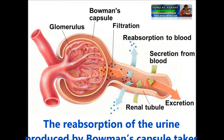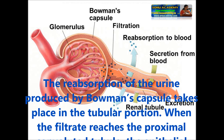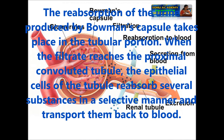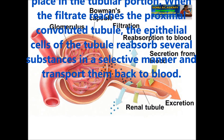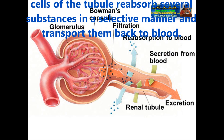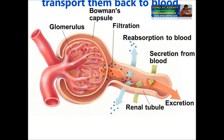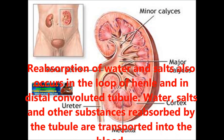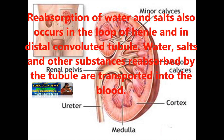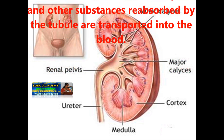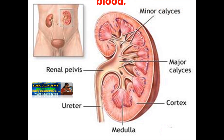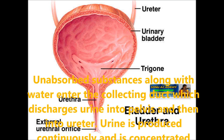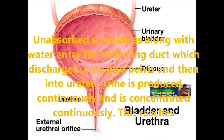Let us see how this is reabsorbed into our body. The reabsorption of the filtrate produced in Bowman's capsule takes place in the tubular portion. When the filtrate reaches the proximal convoluted tubule, the epithelial cells of the tube reabsorb several substances in a selective manner and transport them back to the blood. Reabsorption of water and salts also occurs in the loop of Henle and the distal convoluted tubule. Water, salts, and other substances reabsorbed by these tubules are transported into the blood, and the unreabsorbed substances along with water enter the collecting duct, which discharges urine into the pelvis and then into the ureter.